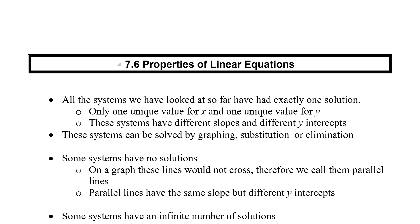If we've got one solution, we've got different slopes and different y-intercepts. Sometimes we're going to find that there are no solutions to our systems. If you were to graph these, these lines would never, ever touch — there is no value of x and no value of y that satisfies both. If two lines never cross, we call them parallel lines.